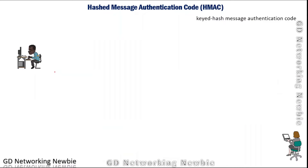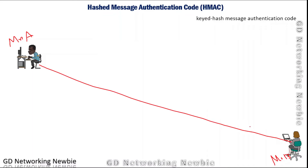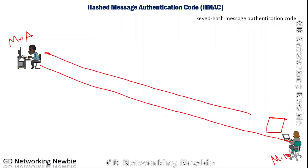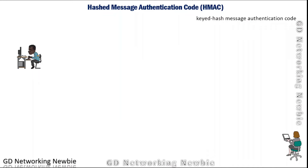With HMAC we want to verify the identity of the sender as well. As an example, let's say this is Mr. A and this is Miss B, and they want to send messages to each other. They not only want to verify that the message has not been changed during transmission from sender to receiver, but also that anyone cannot simply generate a new message, calculate a hash value, and send it. If there is any man in the middle who intercepts and changes the message, with HMAC we can detect that and verify who the actual sender was.